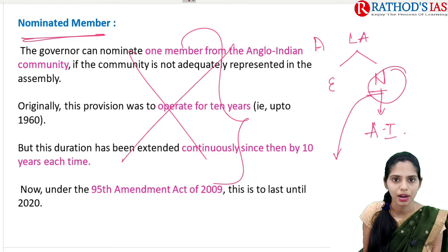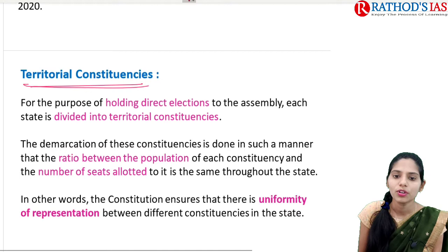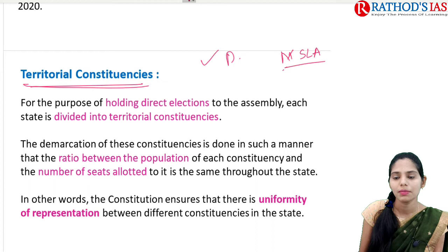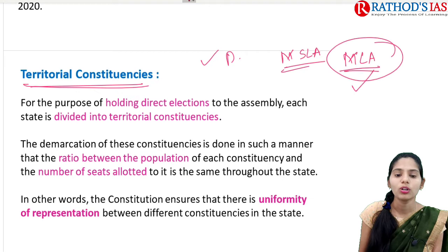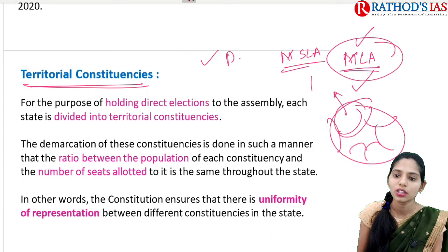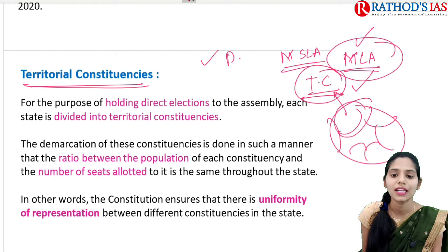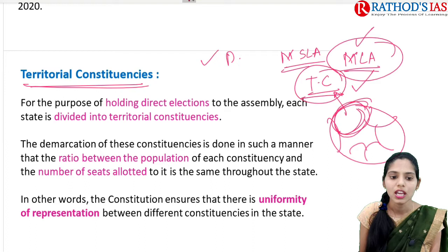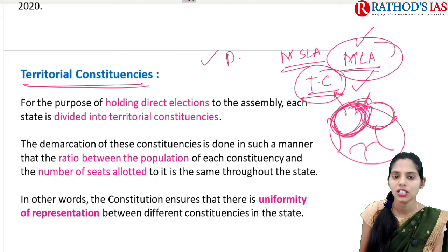The next topic is territorial constituencies. Since we are going for direct elections, the members of the State Legislative Assembly — that is MLAs — will be directly elected by the people. To hold these direct elections, the state will be divided into some parts called territorial constituencies. This demarcation of constituencies is done in such a manner that each constituency has seats allocated mainly based on the ratio of population, ensuring uniformity of representation across different constituencies in the state.